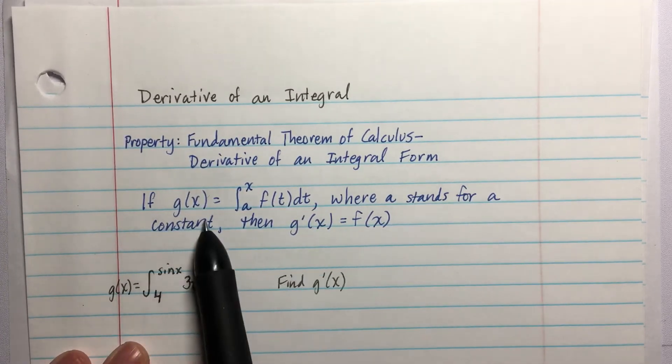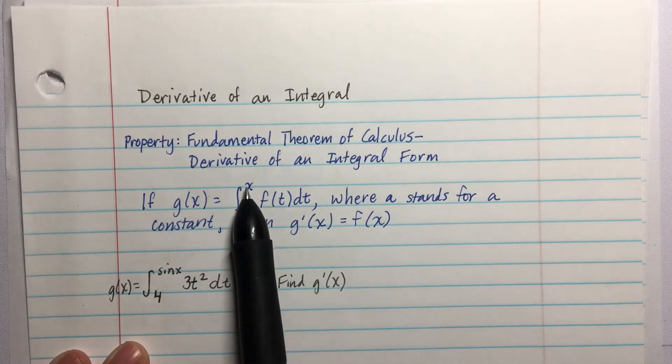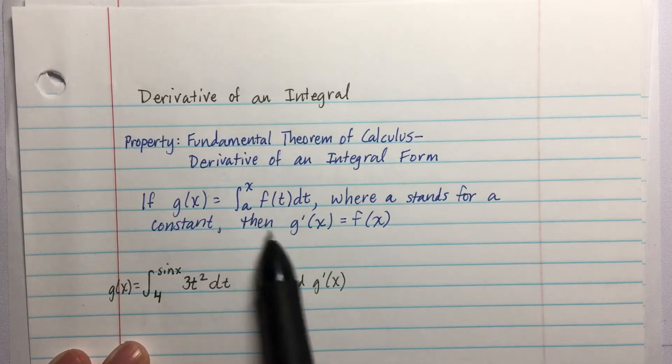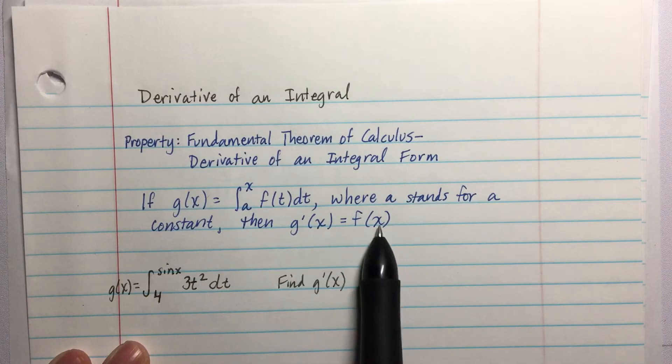And it states this: if g(x) equals the integral from a to x of f(t)dt, where a is a constant, so a is some number, then g'(x) is just f(x).